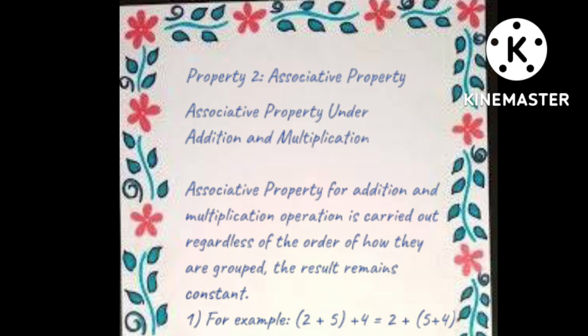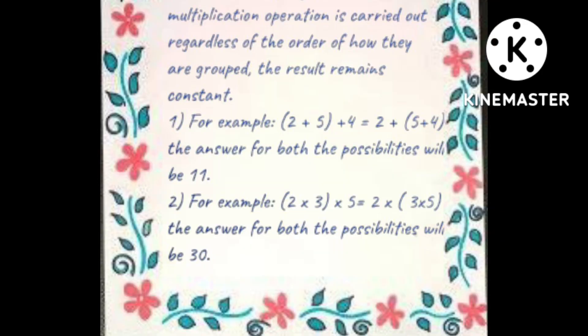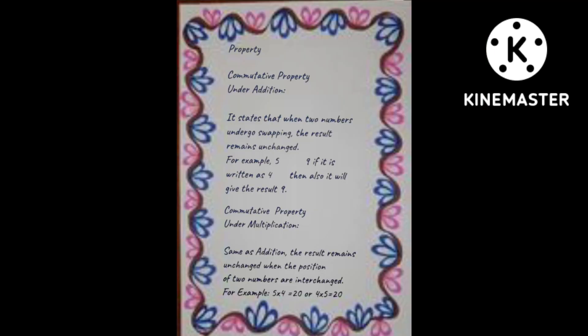The next one is associative property — associative property under addition and multiplication with information under it. The next one is commutative property.